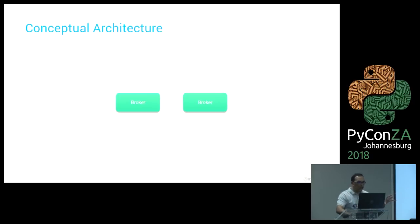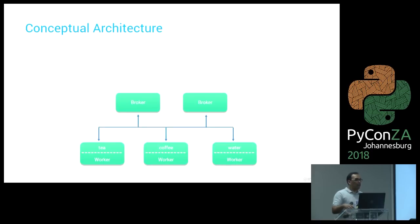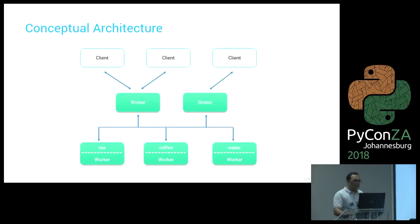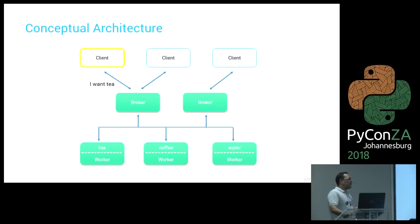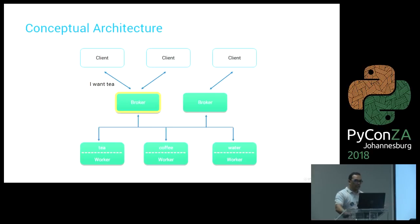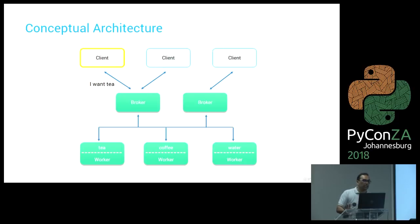The conceptual architecture is based on the Major Domo pattern. The gateways we call brokers — we have two for fault tolerance and load balancing. Below that we have our workers, which are the actual services that run — conceptually a tea worker, coffee worker, and water worker. Above that, clients connect to the brokers, and all workers connect to all brokers. A client wanting tea sends that request to the broker; the broker finds an available tea worker, sends it off, the tea worker processes it, returns it to the broker, which passes it back to the client.